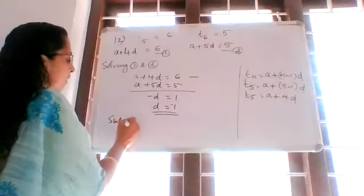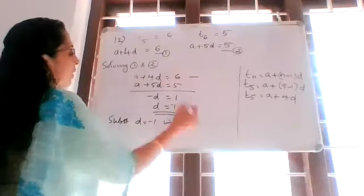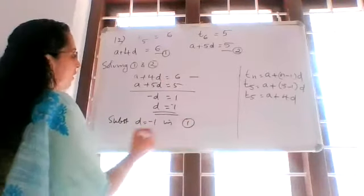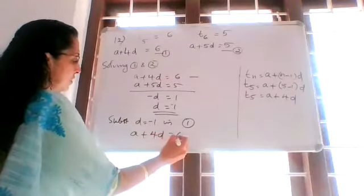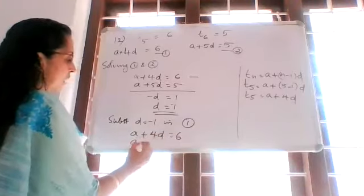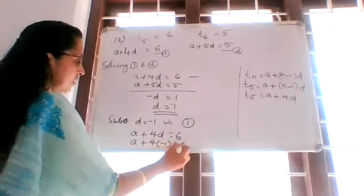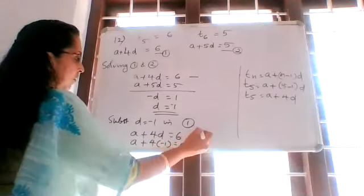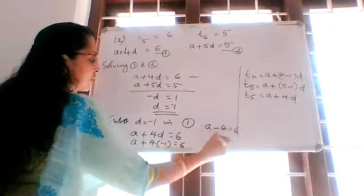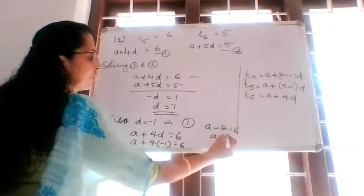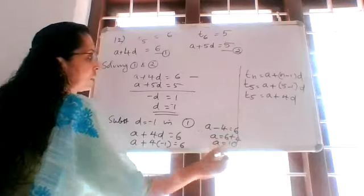Substitute D is equal to negative 1 in equation number 1. We have A plus 4D is equal to 6. So A plus 4 into negative 1 is equal to 6. Therefore A minus 4 is equal to 6, so A is equal to 10.